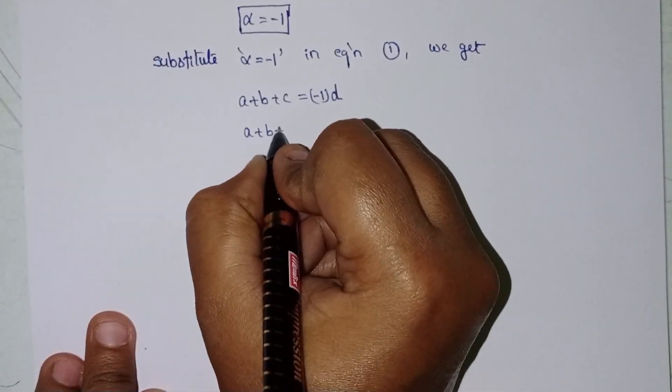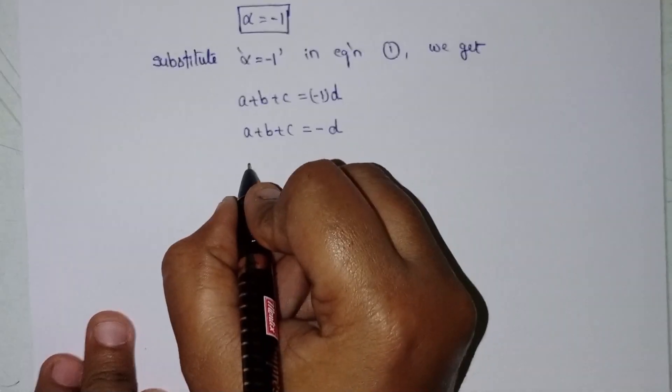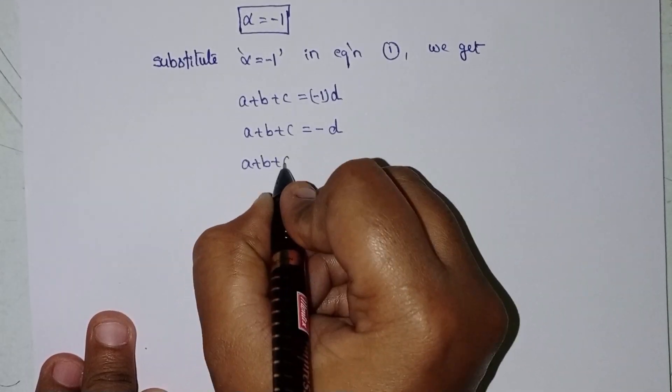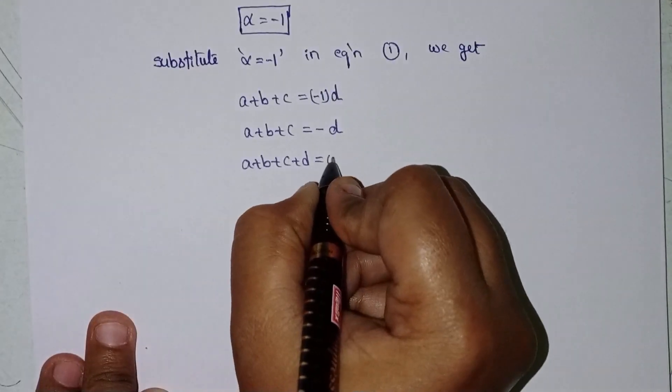A plus b plus c equal to minus d. So, a plus b plus c plus d equal to zero.